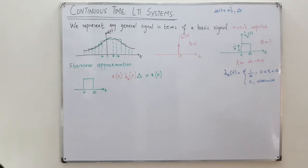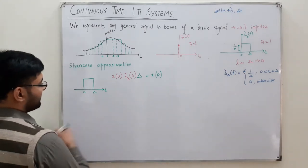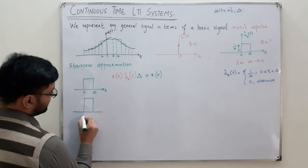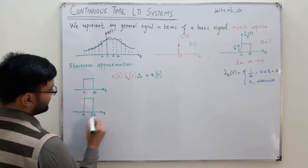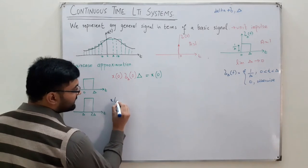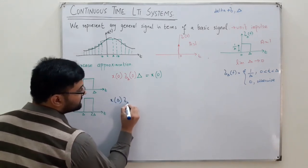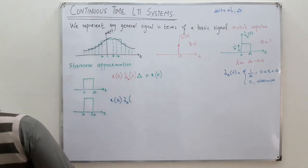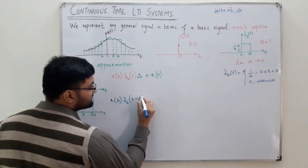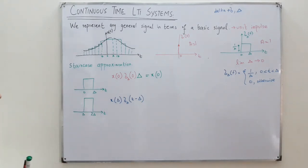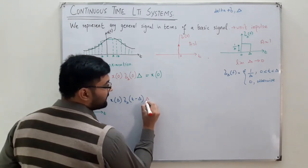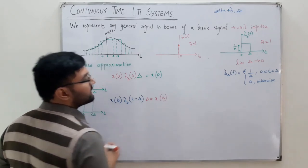Let us say from delta to 2 delta — I need x(delta). You multiply x(delta) with an impulse located at t equal to delta. So I would have delta_delta(t minus delta) because I have shifted towards the right. This would give me x(delta) multiplied with 1 over delta, so I have to multiply another delta with it to get x(delta).